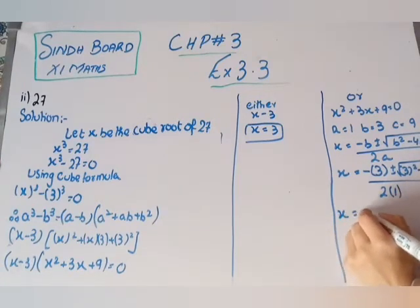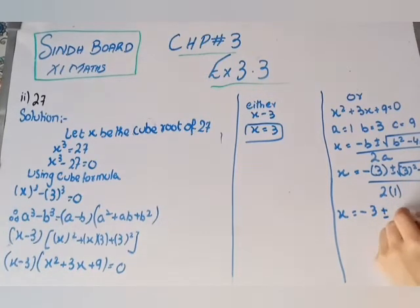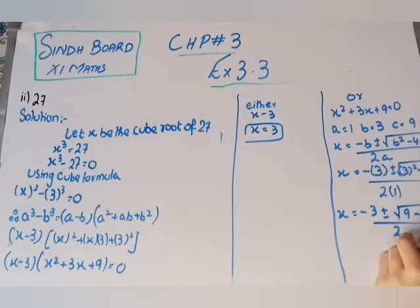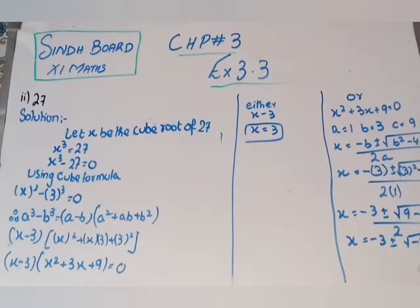Solving inside the root: minus 9 minus 36 gives minus 27. So x equals to minus 3 plus or minus under root of minus 27, upon 2.